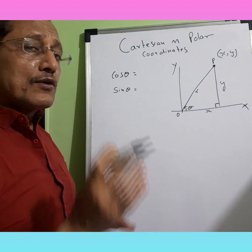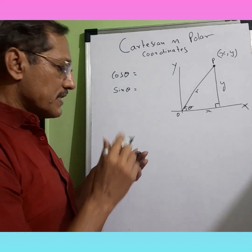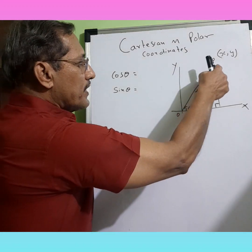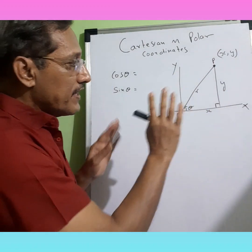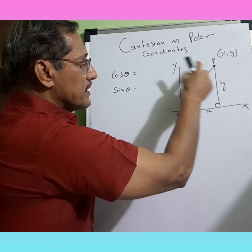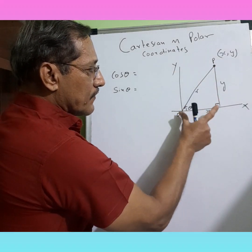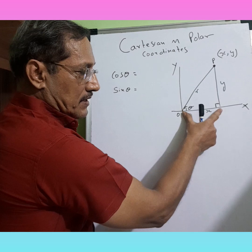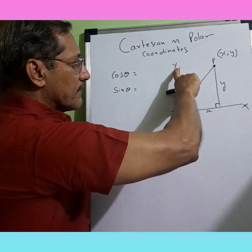Okay, now how do we get into polar coordinates? Now see, this point I can define by this and this. How much is it away from origin in terms of X axis and how much is it away from origin in terms of Y axis.